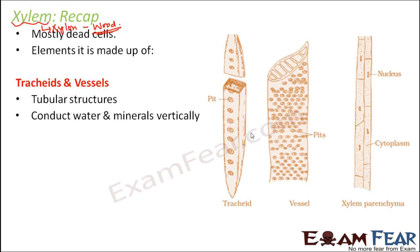Tracheids and vessels are tubular structures that conduct water and minerals vertically. In the case of xylem, vertical conduction is most important, because the root system absorbs water from the soil, and all other portions are above ground. So water and minerals need to be conducted vertically upwards through the plant, and tracheids and vessels help in doing that.